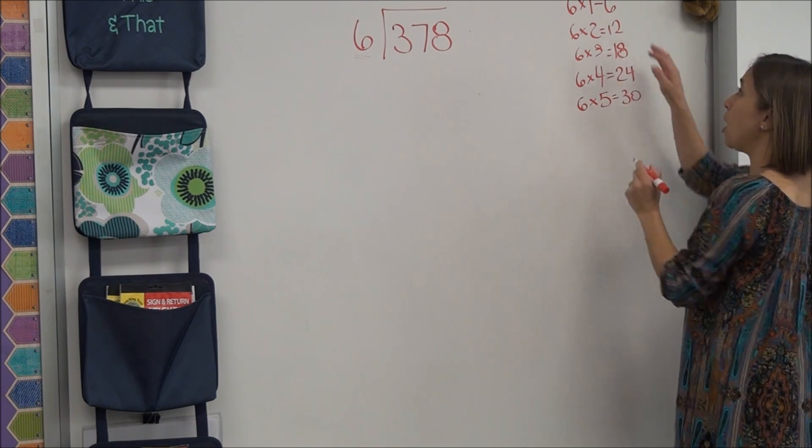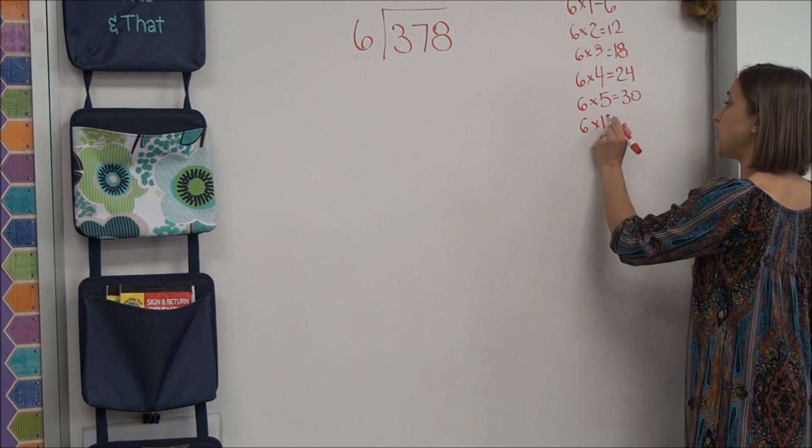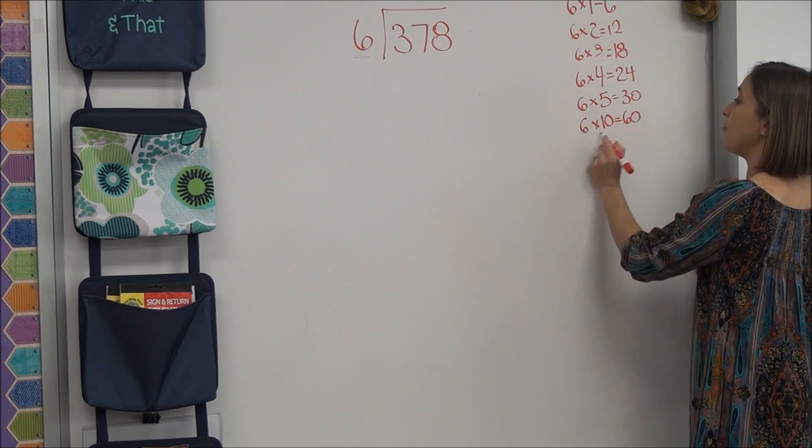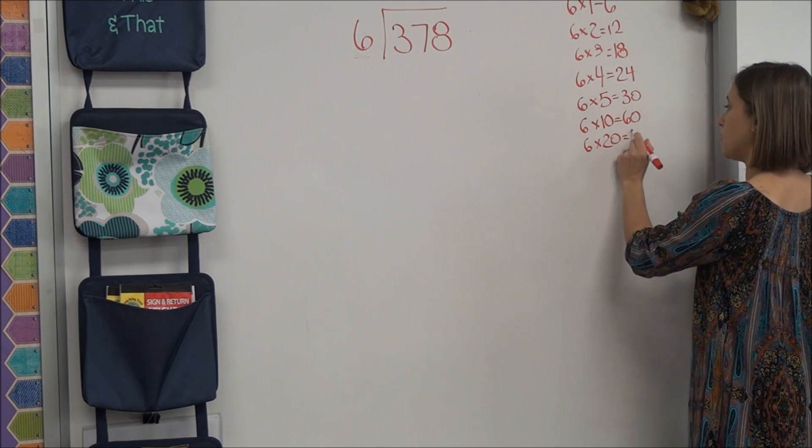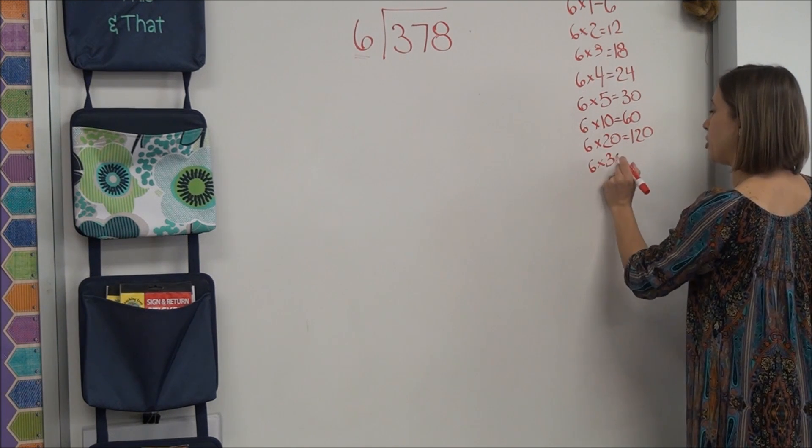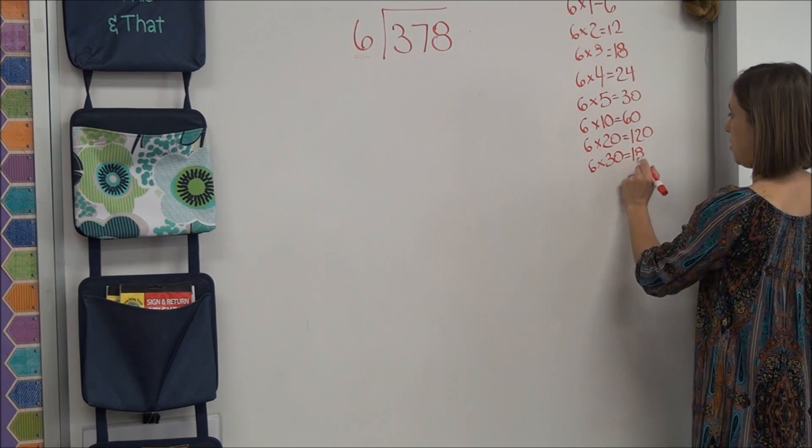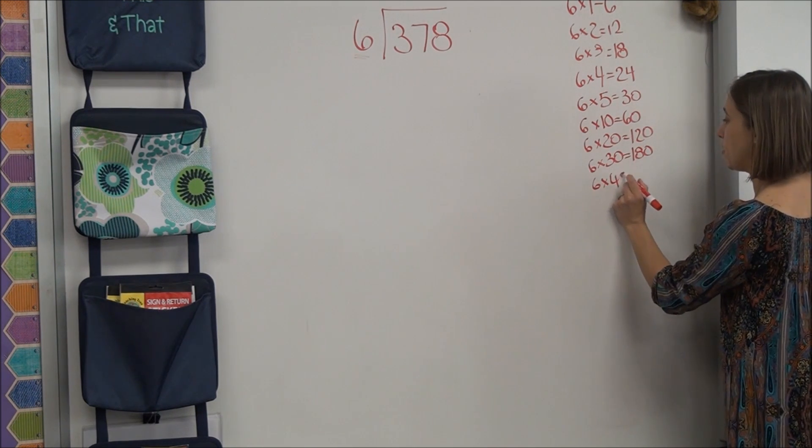All right. Let's use those to help us figure out some other facts. If I know 6 times 1, I can figure out 6 times 10. If I know 6 times 2, I can figure out 6 times 20. If I know 6 times 3, I can figure out 6 times 30. 180. If I know 6 times 4, I know 6 times 40. 240.